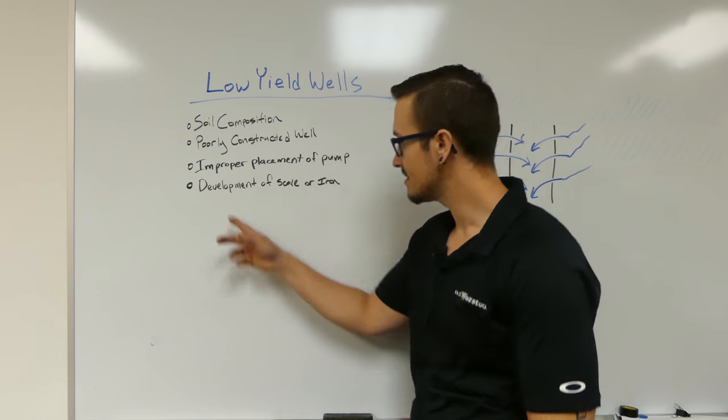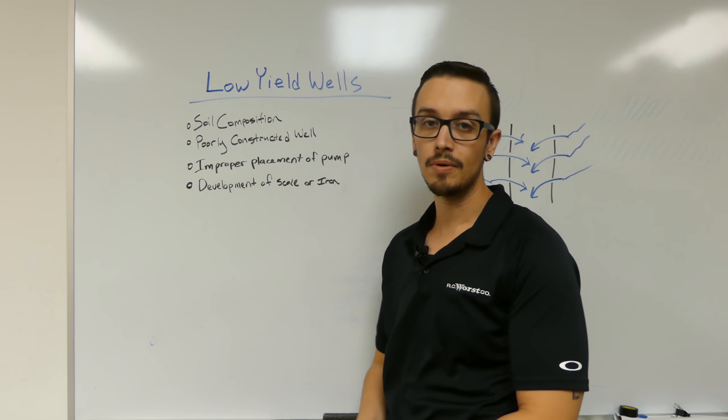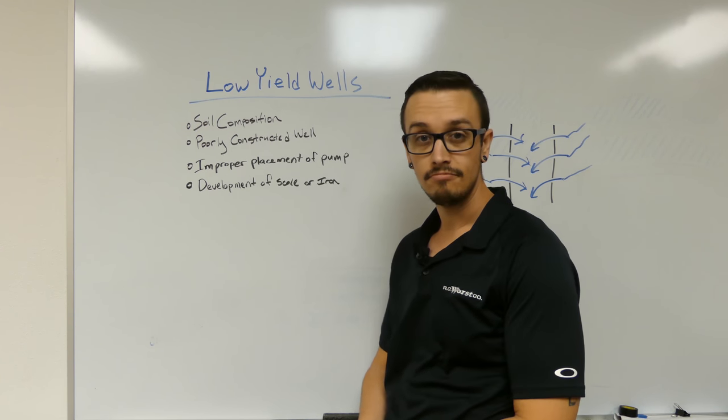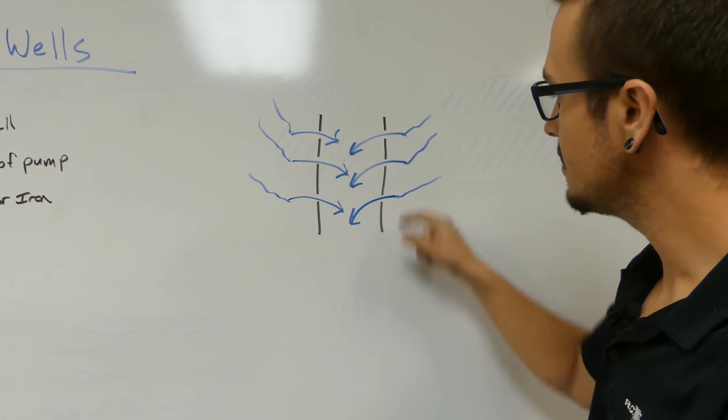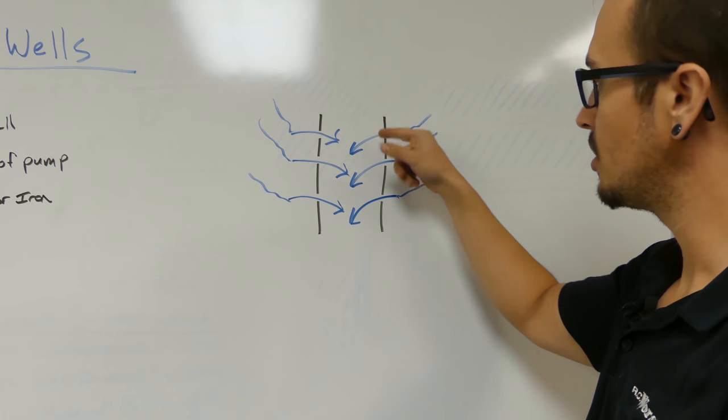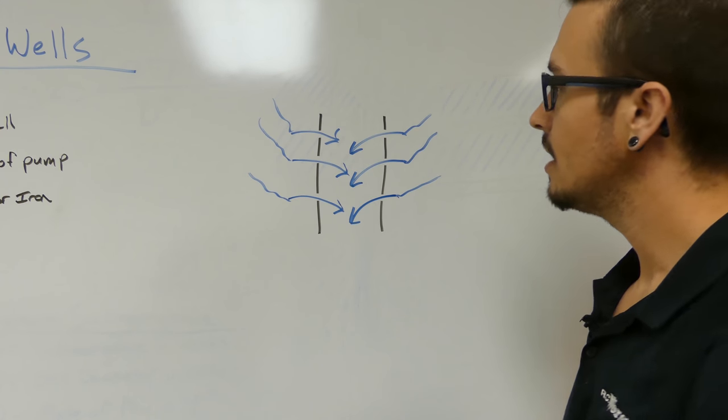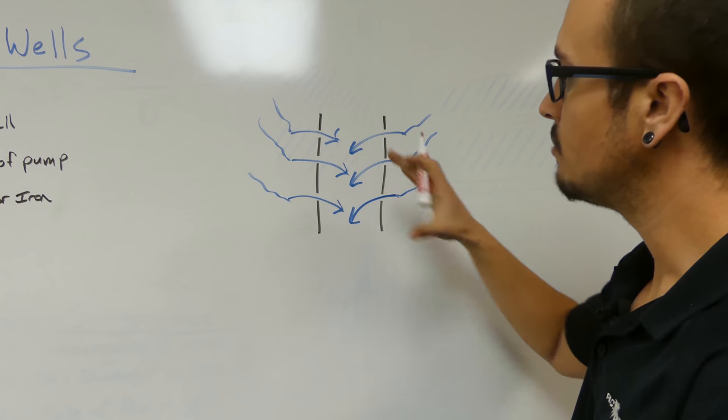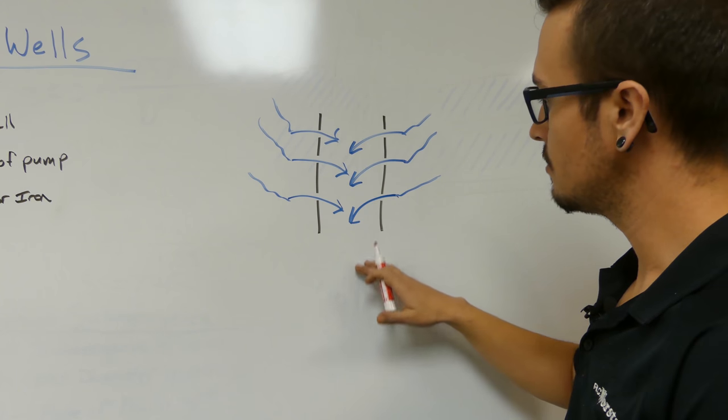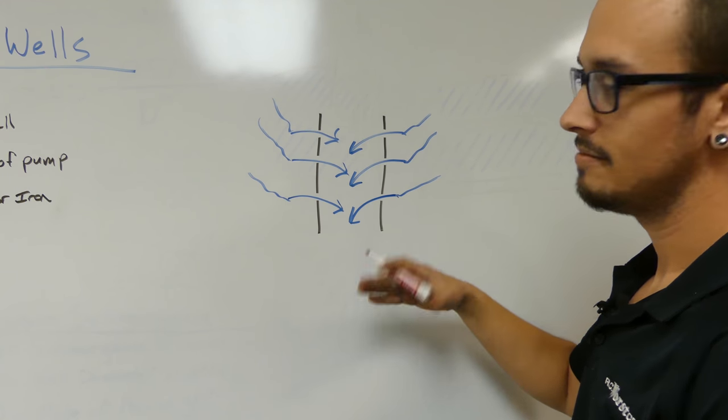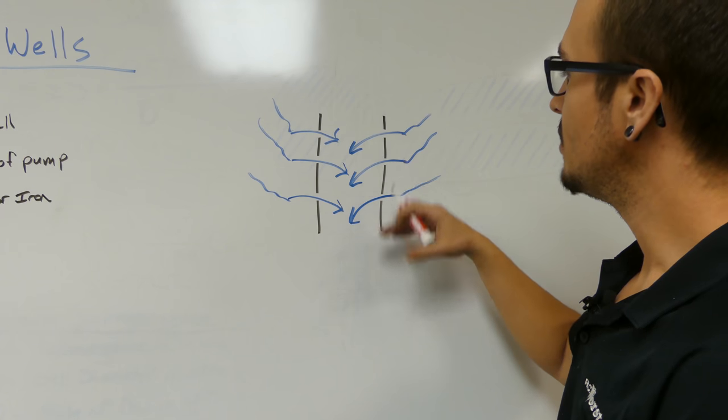Okay, so the next thing we're going to talk about is development of scale or iron. Okay, so what we've got here is basically a zoomed-in version of a well casing. These are the perforations that replenish the water into the well. And this is a pretty simple concept that most often affects people over time, where initially the well is going to produce really well. No pun intended.